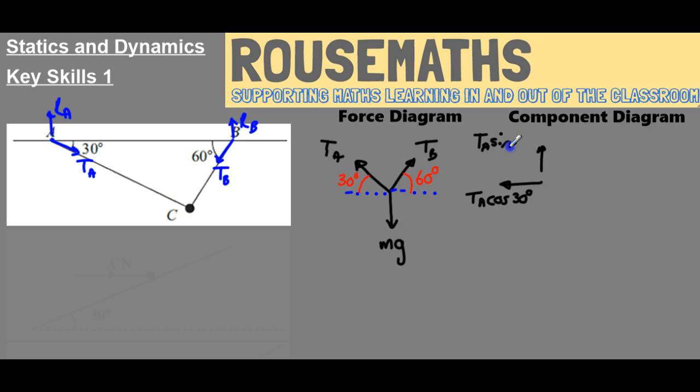That's our tension in A resolved. For B similarly, we're going to have the tension in B times sine of 60, and this one's going to be the tension in B times cos 60, because I'm going through the angle. It's going to be cos horizontally away from the angle, sine vertically. Finally we just put our mg in because that's already in the direction we want it to be.